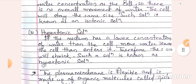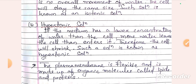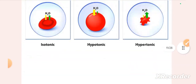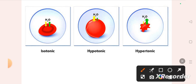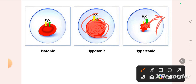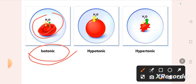In a hypertonic solution, the medium has a lower concentration of water than the cell, so more water leaves the cell than enters it — therefore the cell will shrink. In an isotonic solution, both water movement in and out of the cell are equal.